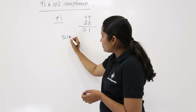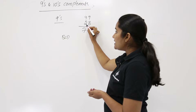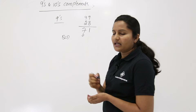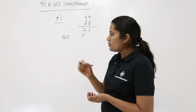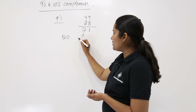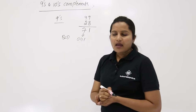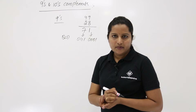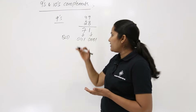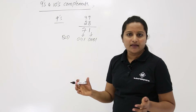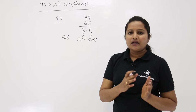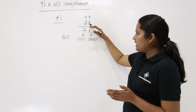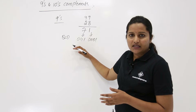If you want the BCD code for the 9s complement of BCD 28, you represent it as follows. The BCD code for 7 is 0111 and the BCD code for 1 is 0001. In BCD we write the code for each and every digit separately, unlike binary where we add all powers of 2 and make a single code.